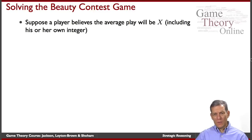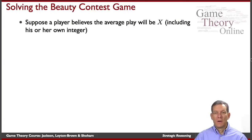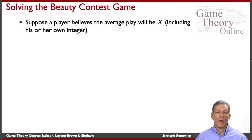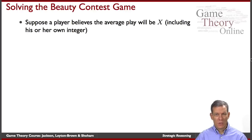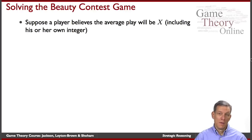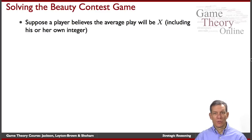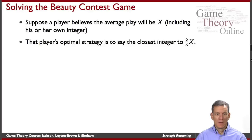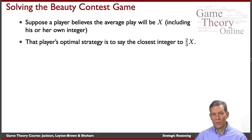How are we going to reason about this? Suppose that I think the average integer named in this game is going to be some number x, including my own integer. Well, what has to be true about my reply to that? My reply should be two-thirds of x — I should be naming the integer closest to two-thirds of whatever I believe the average is going to be. So my optimal strategy should be naming an integer closest to two-thirds of x.